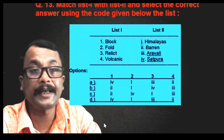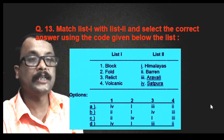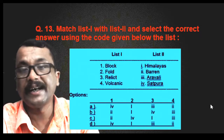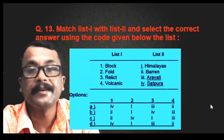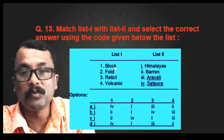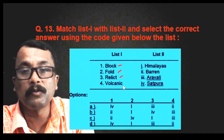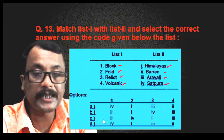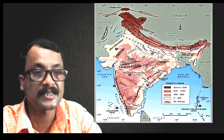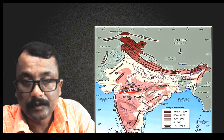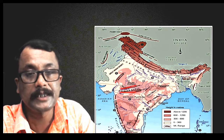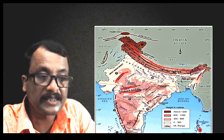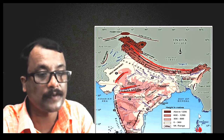Question number thirteen is a list-matching question worth four marks. List one contains types of mountains: Block Mountain, Folded Mountain, Relic Mountain, and Volcanic Mountain. List two contains names: Himalayas, Vindhya, Aravalli, and Satpura. Satpura and Vindhya are block mountains; Aravalli is a relic mountain; Himalayas are folded mountains; and Barren Island is a volcanic mountain. Without any doubt, option D is the correct answer.